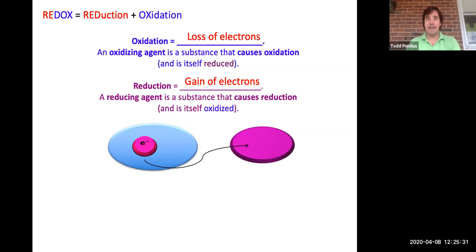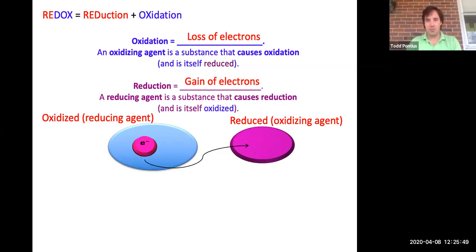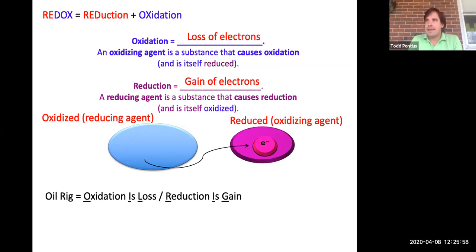Here's an animation to help illustrate this. The purple circle is going to be reduced, the blue one is going to be oxidized. So again, electrons have to go somewhere — whatever is oxidized has to give them directly to something else. There are roughly 8,942 mnemonics for redox reactions. One of them is OIL RIG: Oxidation Is Loss of electrons, Reduction Is Gain.